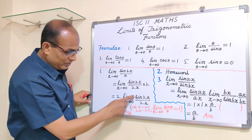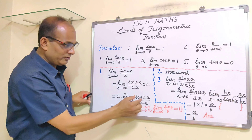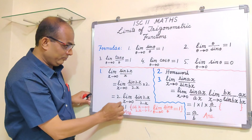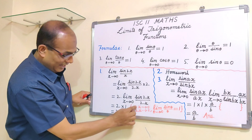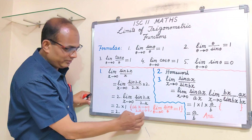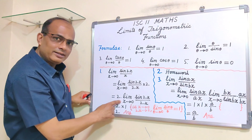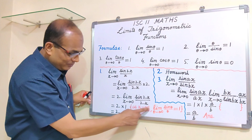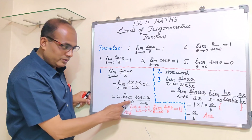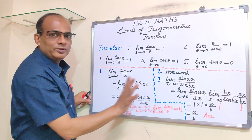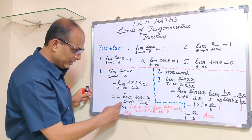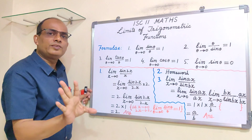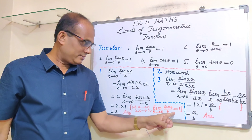Using the formula: limit theta→0 of sin(theta)/theta = 1, the expression limit 2x→0 of sin(2x)/2x equals 1. Therefore the answer is 2 × 1 = 2. Please write down the reason and formula you are using.